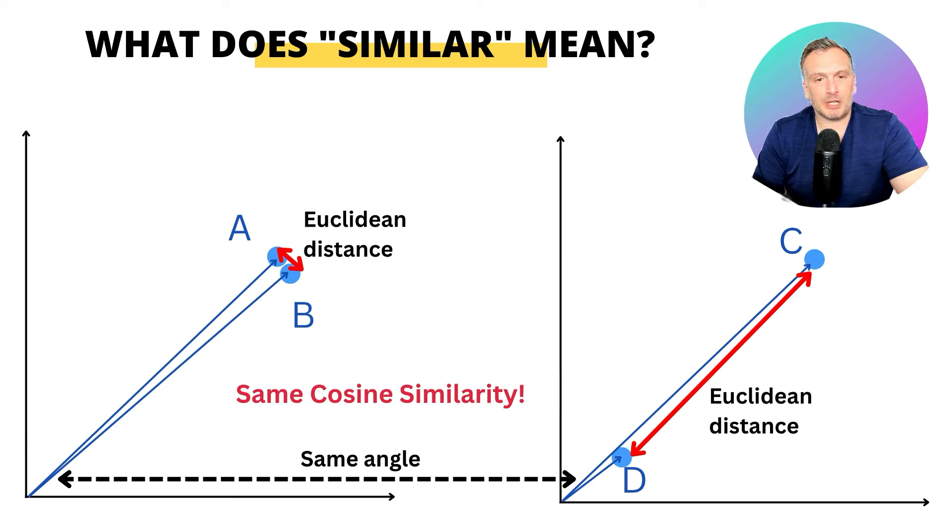But when we measure the angle between the two vectors, we actually get the same angle. So when it comes to cosine similarity, those two sets of vectors have the same similarity. When you index your database, it is important to think about what is the right metric for your use case. It is good to know about the differences in the way different metrics define the concept of similarity.